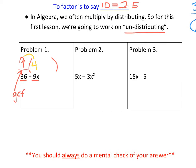Ask yourself: 9 times what gives me 36? The answer is 4. Then, 9 times what gives me 9x? That would be x. We put a plus sign in there to give two terms. Always do a mental check — distribute in your head to verify. 9 times 4 gives 36, and 9 times x gives plus 9x. So now we're going to do the same thing on the next example.